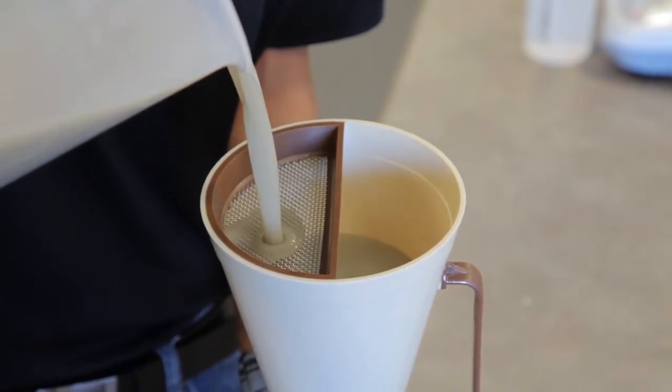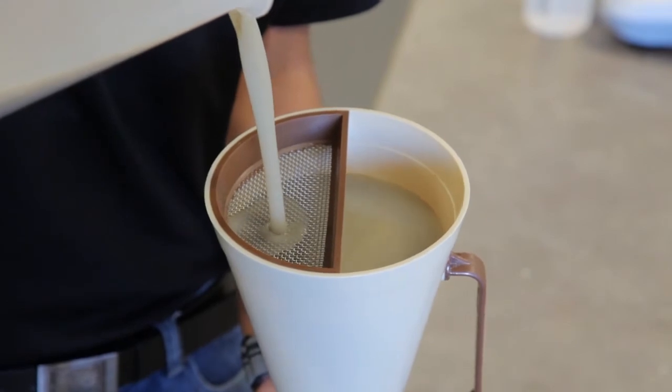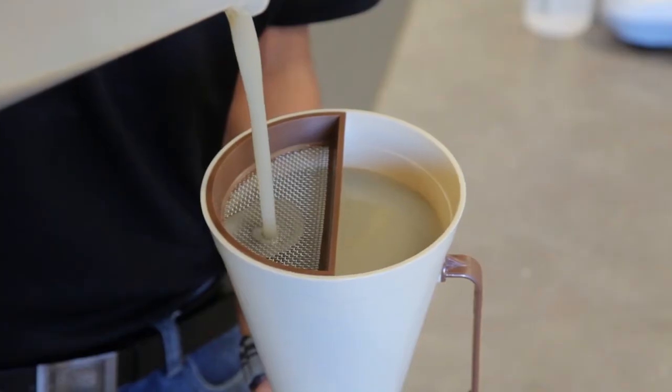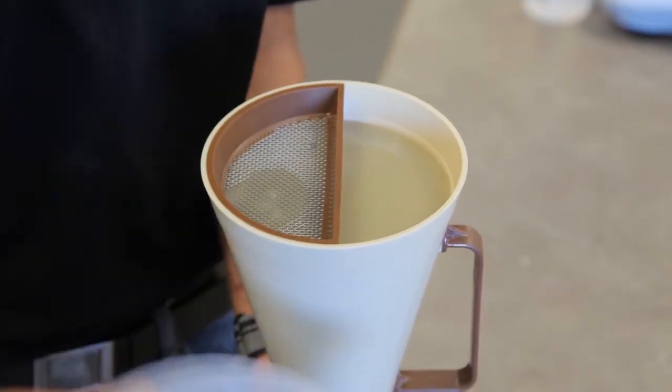Lumps collecting over the metal screen is also an indication that the drilling fluid is not properly mixed, and requires additional mixing prior to testing. Continue filling the funnel until the drilling fluid reaches the line just below the metal screen.